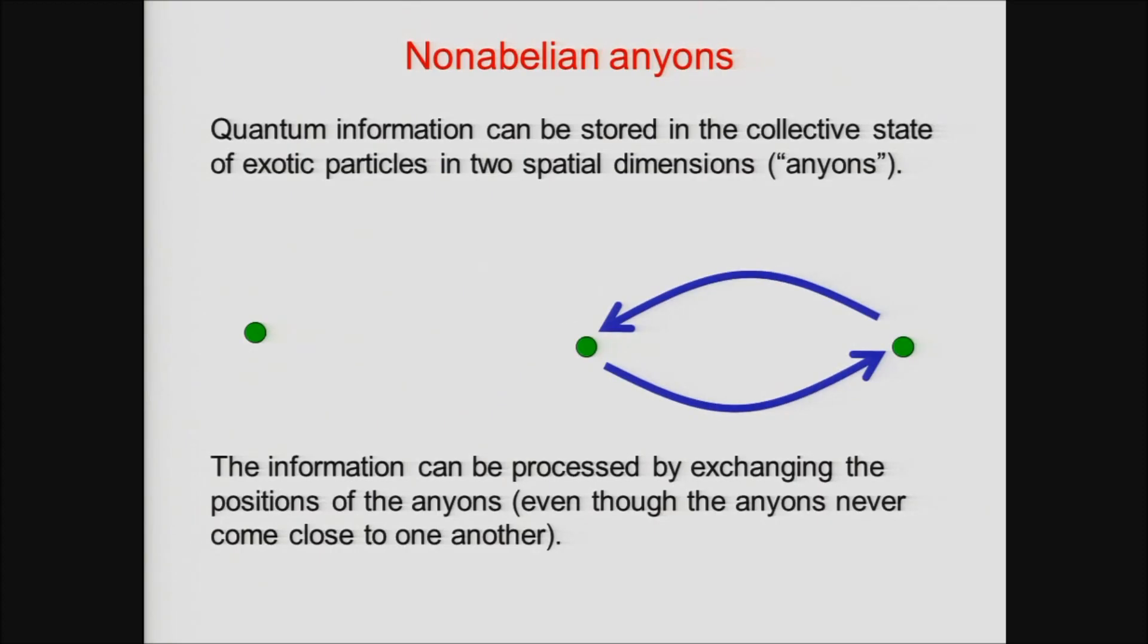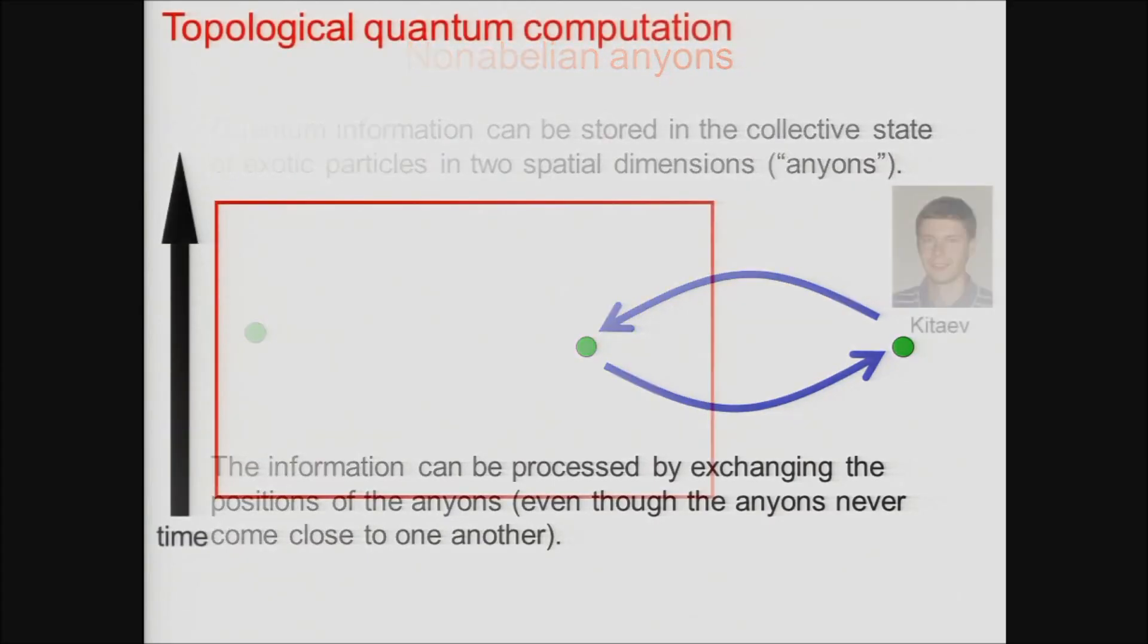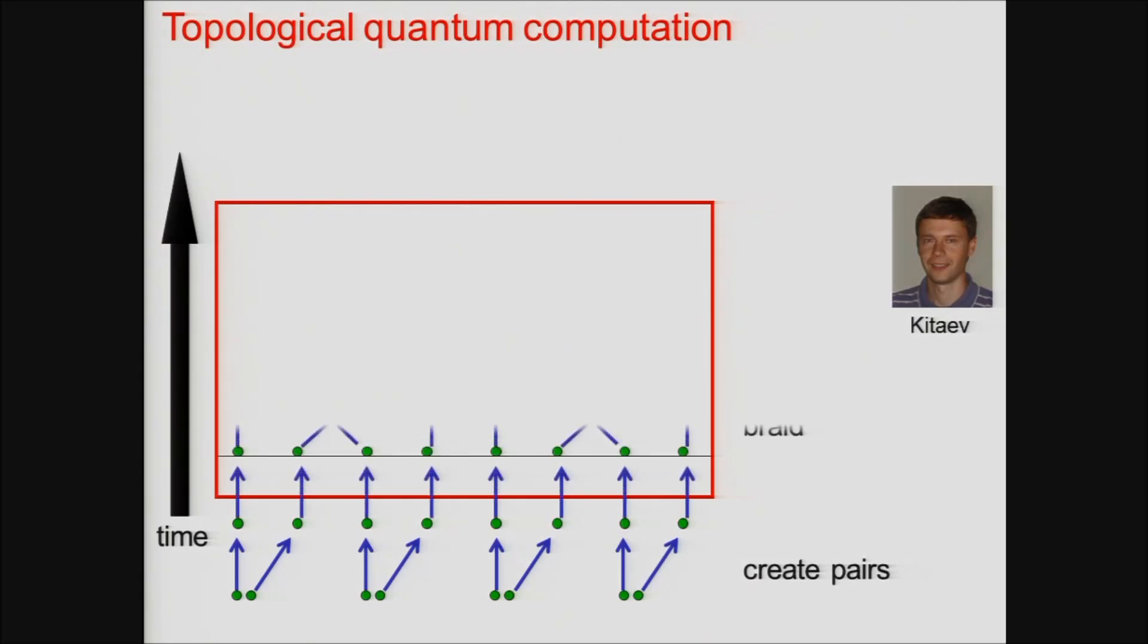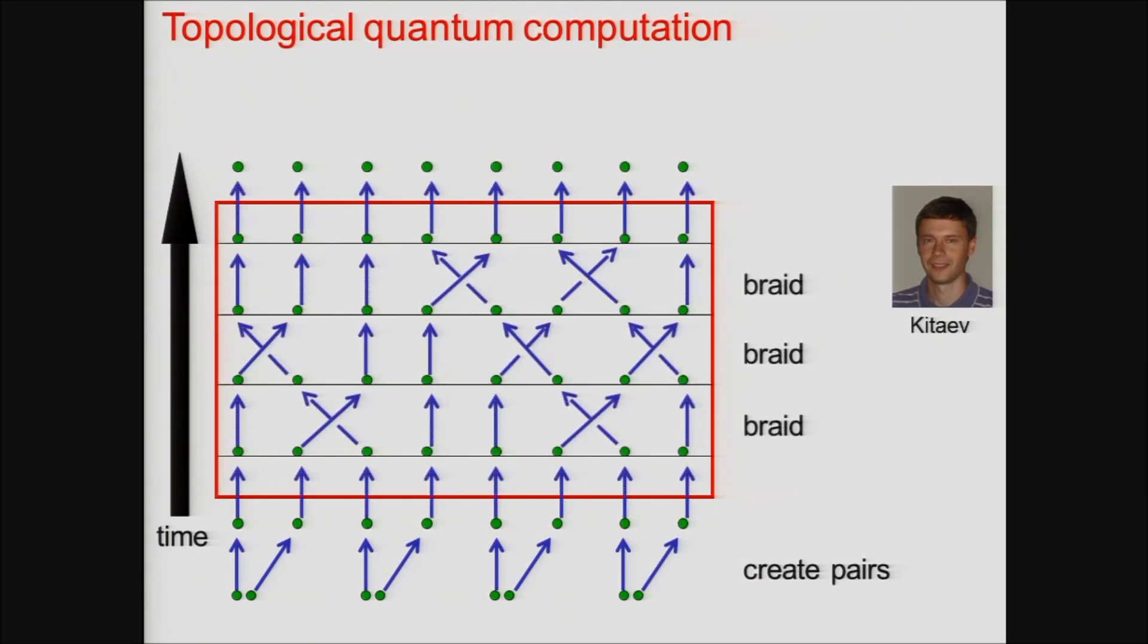So we can envision operating what Kitaev called a topological quantum computer. We would initialize it by preparing pairs of anyons and then perform a sequence of exchanges of the particles so that the world lines of the anyons would trace out a braid in space-time. And to read out the computer we would bring the anyons together in pairs and observe whether they annihilate one another and disappear or not.